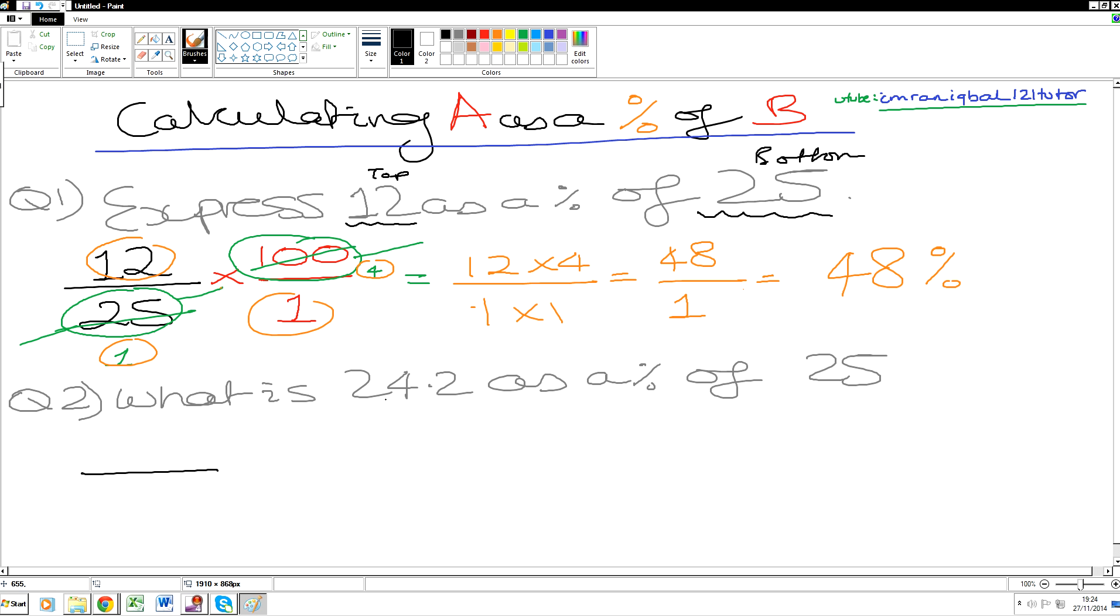So we draw a fraction. The first number goes on top, the second number - as a percentage of that one - goes on the bottom. And then what do we do? We do the same that we've just done. We times by 100 over 1.